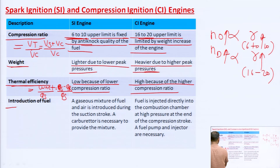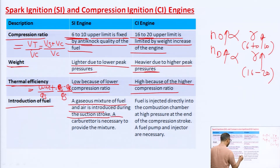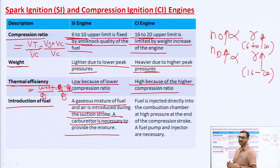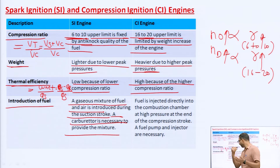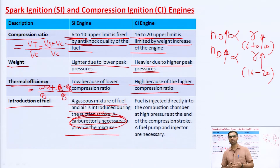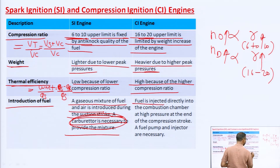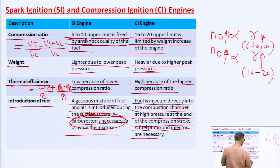Regarding introduction of fuel: in the SI engine, a gaseous mixture of fuel and air is introduced during the suction stroke. A carburetor is necessary to provide the correct mixture. During the suction stroke, the air-fuel mixture enters the combustion chamber, and a carburetor is used to prepare the correct air-fuel mixture. In the case of the CI engine, fuel is injected directly into the combustion chamber at high pressure at the end of the compression stroke, and a fuel pump and injector are necessary.